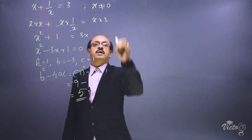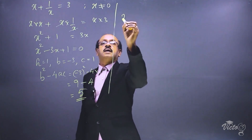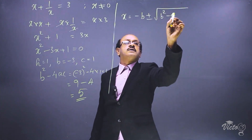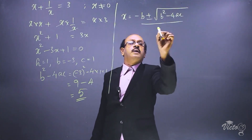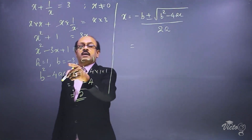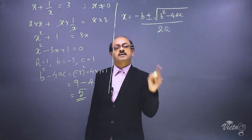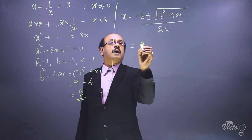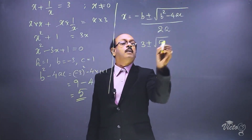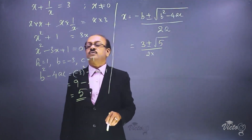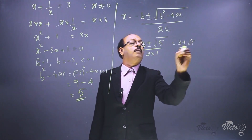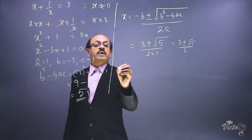Now we find the solution using the quadratic formula: x equals minus b plus or minus root of b squared minus 4ac, all divided by 2a. The value of b is minus 3, so minus b is plus 3. Therefore x equals 3 plus or minus root of 5, divided by 2 into 1, which gives 3 plus or minus root 5, all over 2.